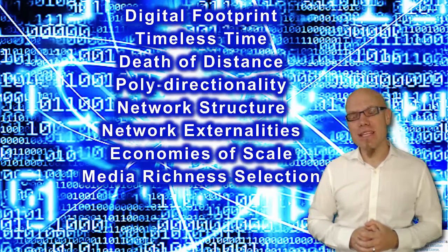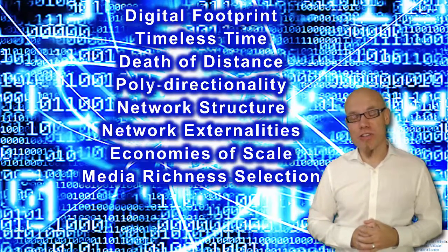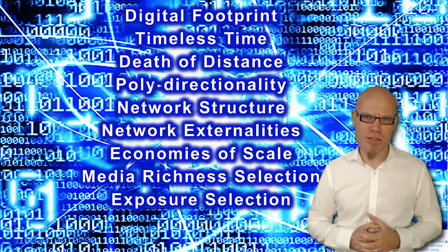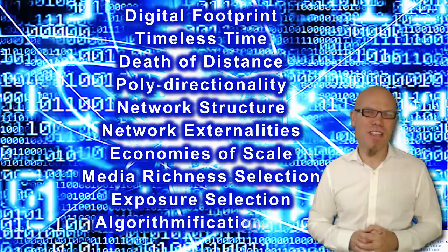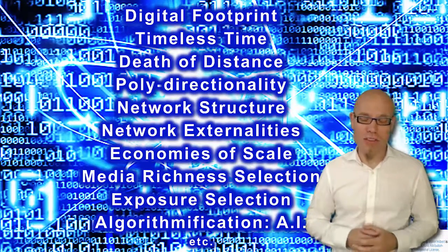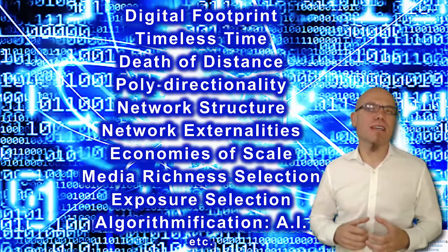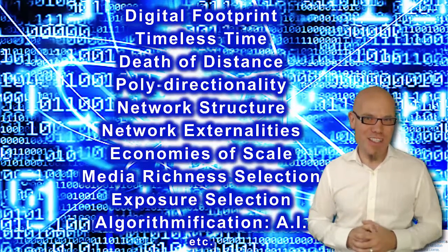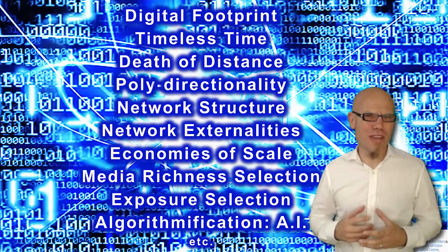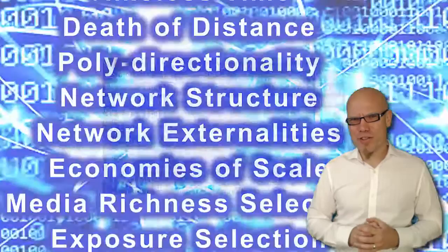Seventh, there are economies of scale that arise from digital content. Eighth, there is a media richness selection — the power of choosing when processing information in digital networks. Ninth, there is exposure selection — you are able to select how much you want to expose. And last but not least, there is what I call algorithmification, which comes from the merger of the computational trajectory with communication networks, incorporating artificial intelligence and pre-programmed algorithms into our information network logic.